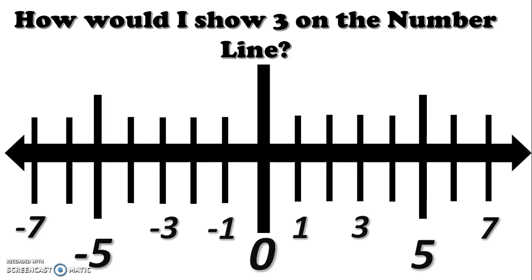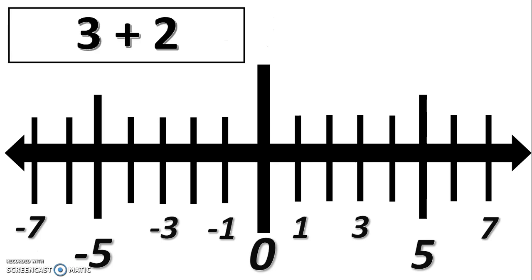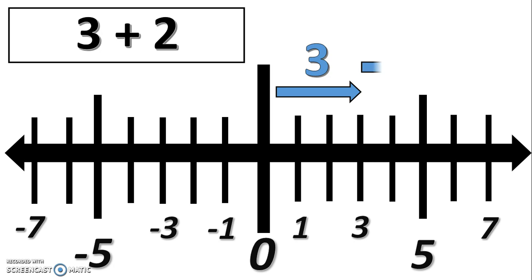First, how would I show three on the number line in relationship to zero? Well, from the zero, I would move to the right three spots, and that would give me a value of three. So now we're going to model three plus two. Again, from the zero we'd move to the right three, and from the three we would then move two additional spots — plus two — giving us the value of five.